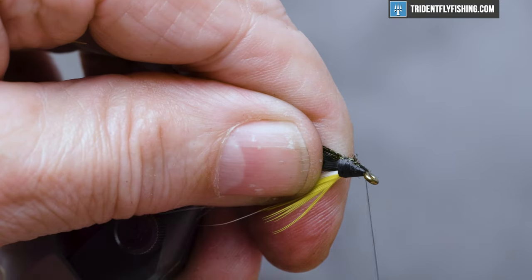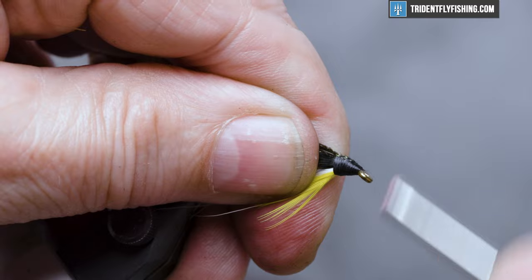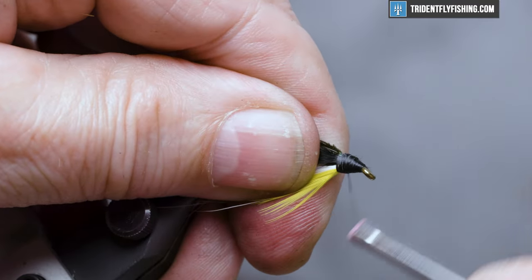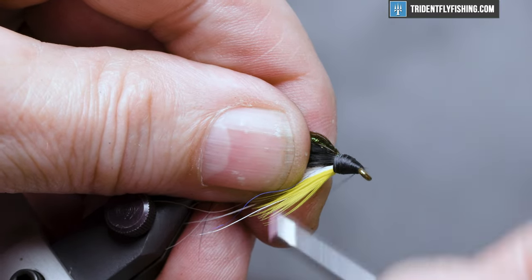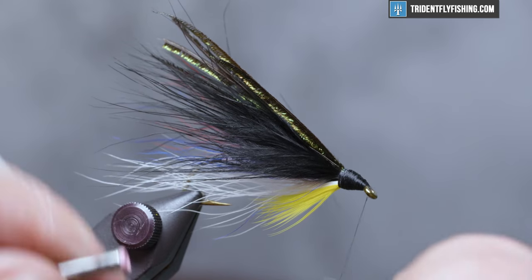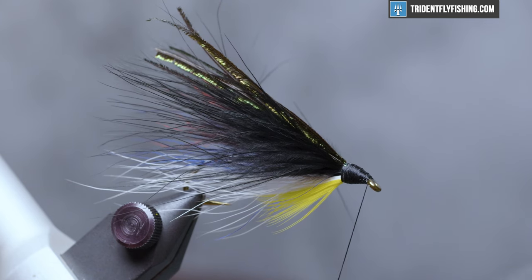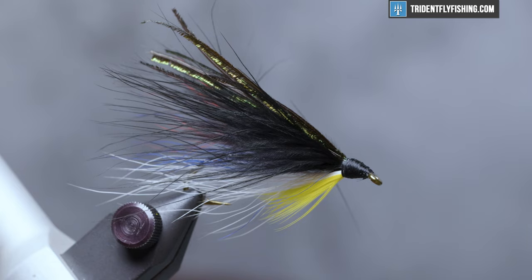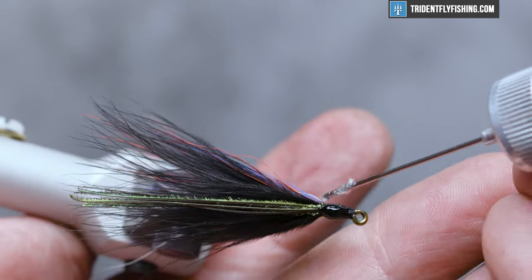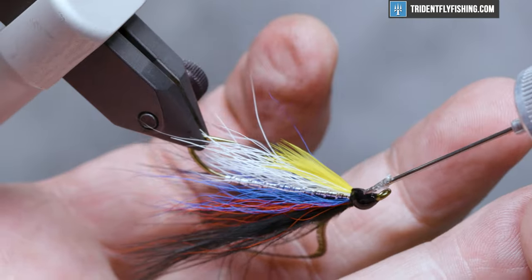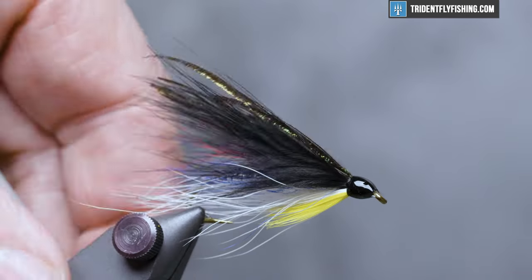And neaten up the head. And I'll just slip down. That's what I'm trying to avoid. Okay. Four five turn whip finish. Seed our knot. Cut our thread. Add some head cement. And our fly is complete.